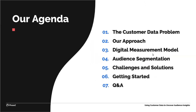Thanks so much, Chris. Today we're going to be talking about the customer data problem and a bit about Phase 2's approach to meeting that problem. We'll take a quick detour into the digital measurement model and its role in activating customer data. We'll spend just a few minutes on the topic of audience segmentation — what it is and how to use it. In the challenges and solutions section, we'll review some challenges that the Phase 2 team has heard from marketers like you and some steps that you can take to meet those challenges. We'll close with three simple steps you can take today to get started using customer data, and we'll make sure we leave some time for Q&A. So let's begin.